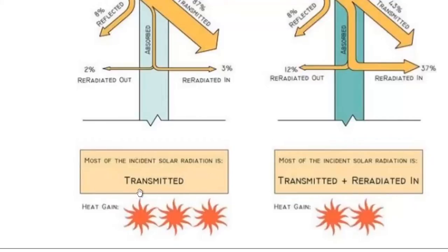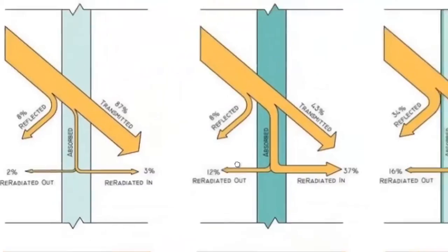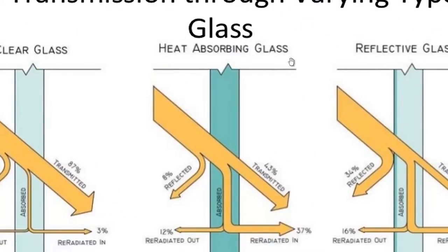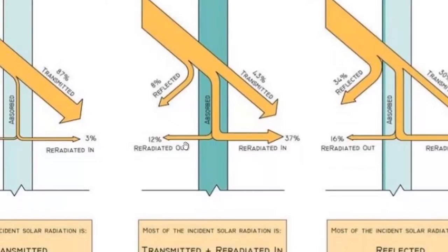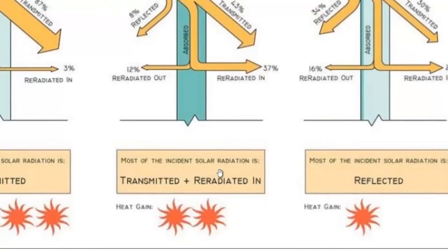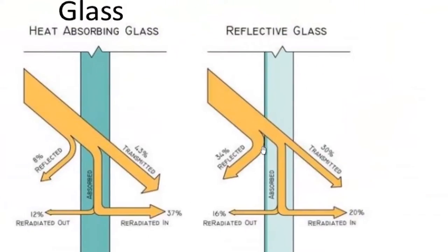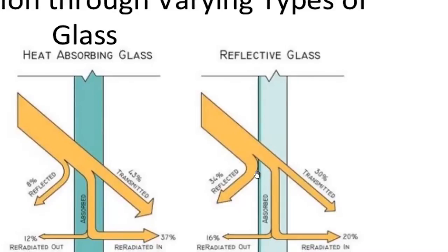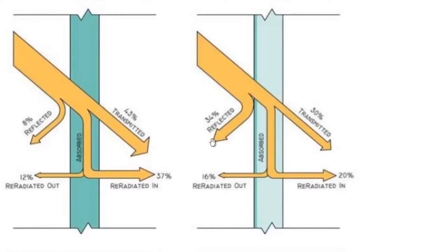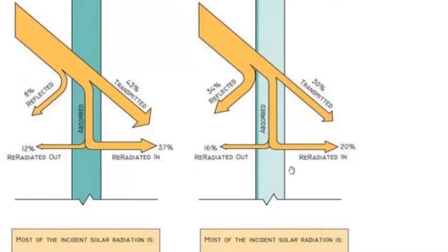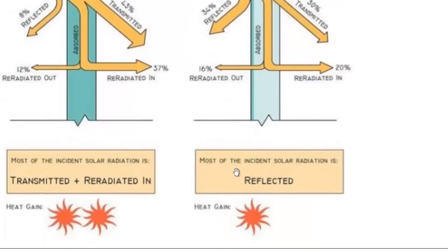For heat-absorbing glass, 8% is reflected, 12% is re-radiated outward, 43% is transmitted, and 37% is re-radiated inward — so heat gain is relatively lesser. The best option in hot and sunny places is reflective glass, where 34% is reflected, 30% is transmitted, 16% is re-radiated outward, and 20% is re-radiated inward — so most incident solar radiation is reflected, resulting in minimal heat gain.